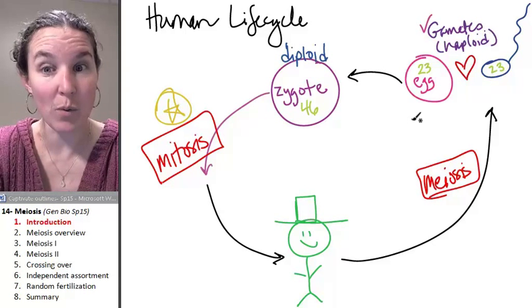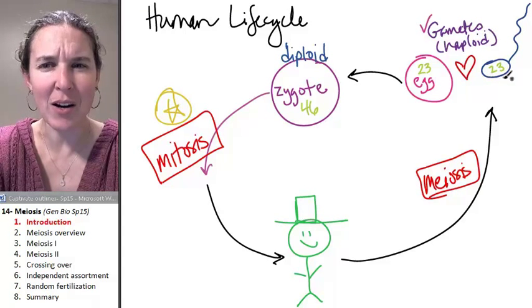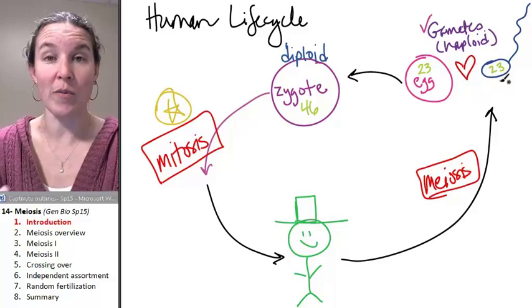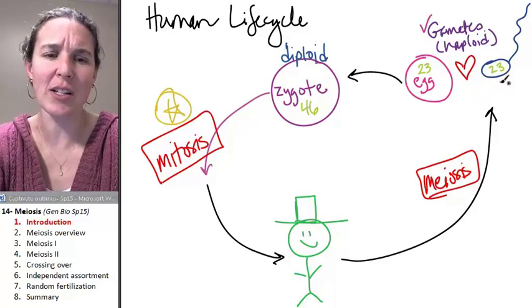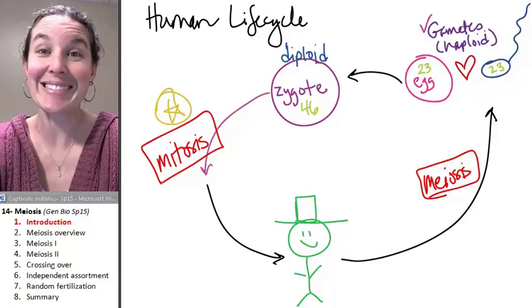All right, so we need a process. That process is meiosis to make our gametes. And we're going to start out with an overview of meiosis, so we can see how are we actually going to do this. And then we're going to go into our specific stages. Talk to you next time.